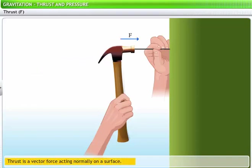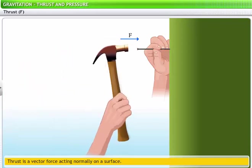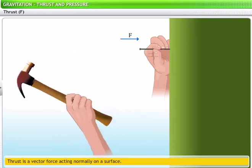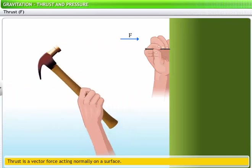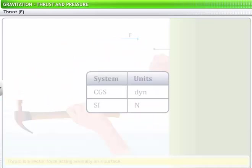Thrust is a vector force acting normally on a surface and is denoted by F. For example, consider the simple act of driving a nail into a wall with a hammer. The force that you exert on the hammer during this activity is thrust. Thrust is measured in dyne in the CGS system and newton, denoted by N, in the SI system.